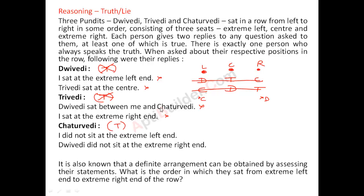Let's check the statements made by T: D sat between me and C, and I sit at the extreme right end — so T is sitting at the extreme right end. If the first statement is true, D is sitting here at the extreme left; then T cannot be at the center, so that must be false. So T is here at the extreme right. D sat between me and C — this is false. I sat at the extreme right end — this will be true. So C will be in the center. This combination is possible.